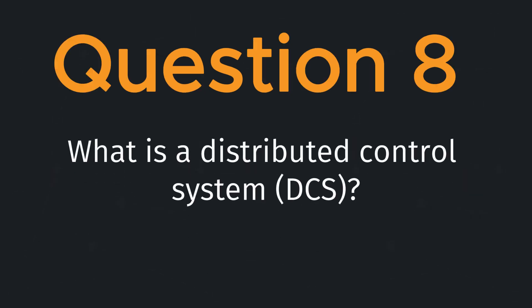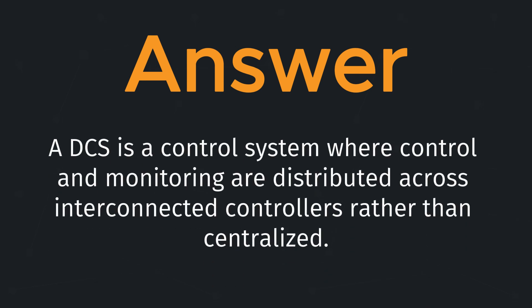Question eight: what is a distributed control system (DCS)? A DCS is a control system where control and monitoring are distributed across interconnected controllers rather than centralized.